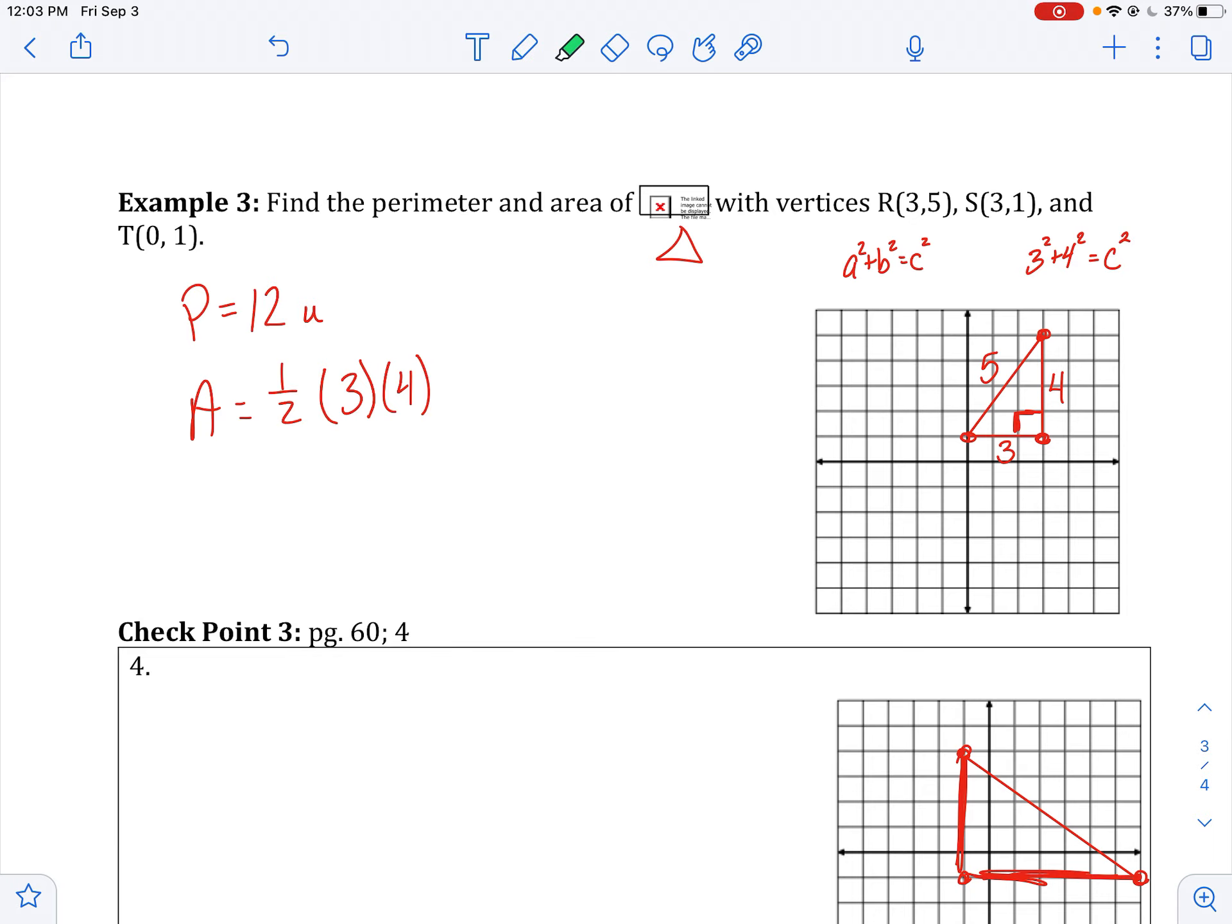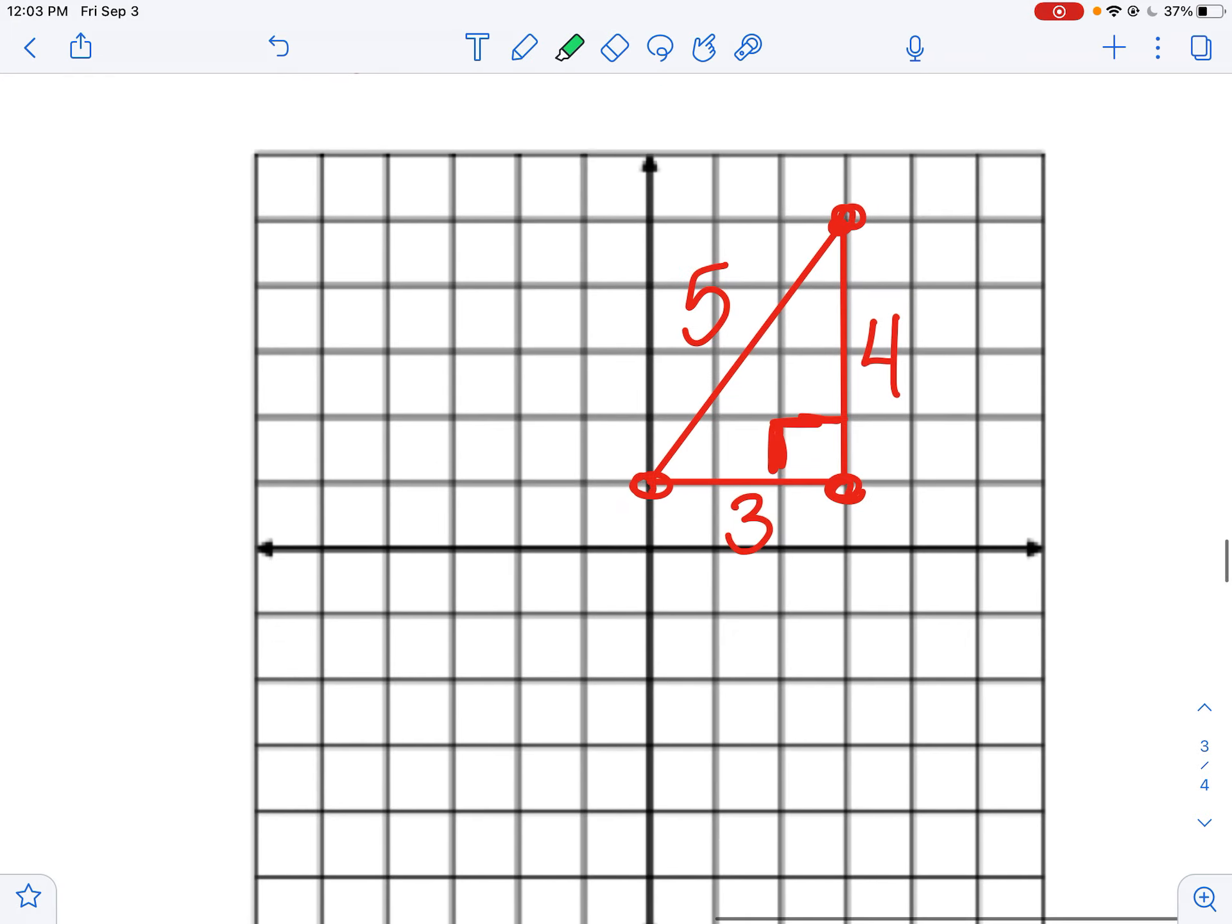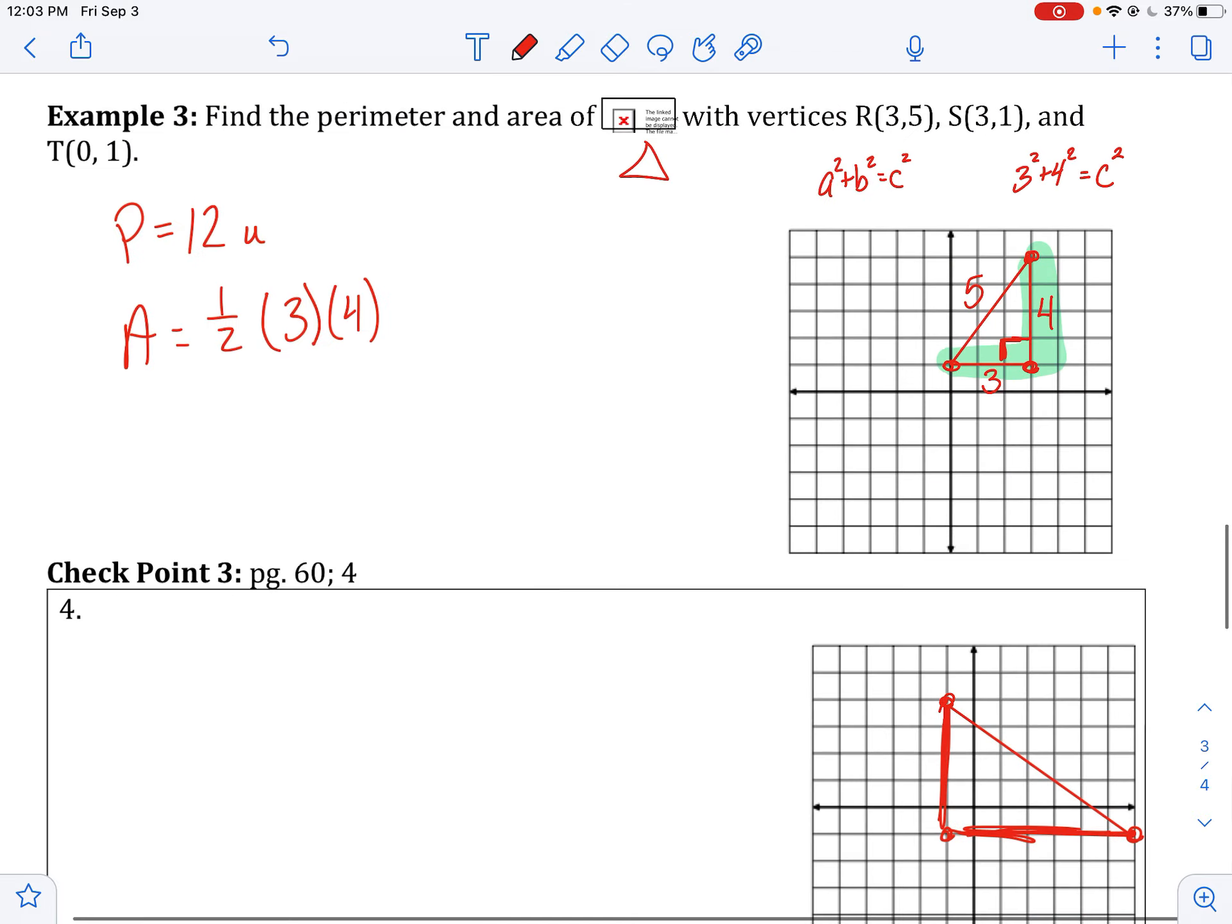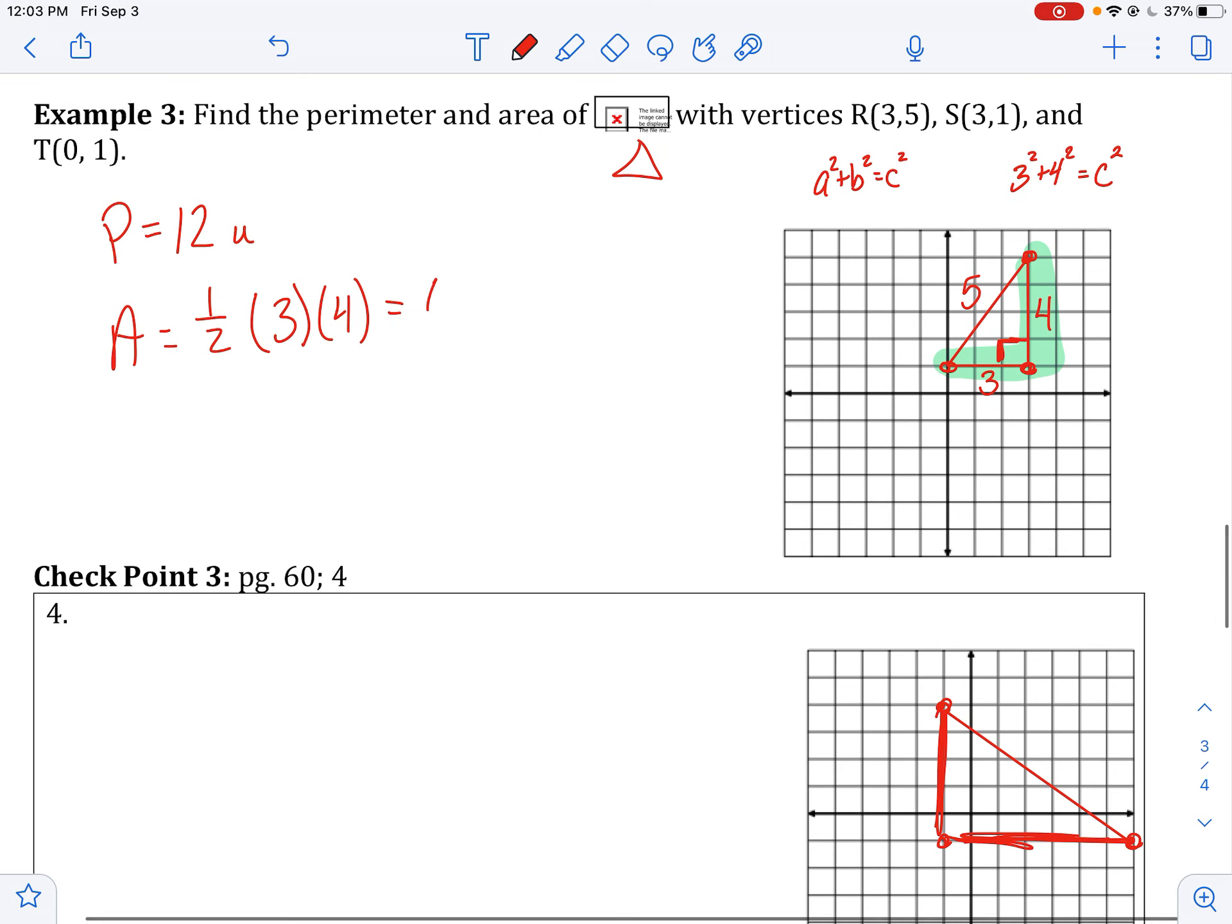And you can switch the order around. The only important thing is that your base and your height had better be at a right angle. 3 and 4 make a right angle. So those are my base and height. This would be 6 square units.